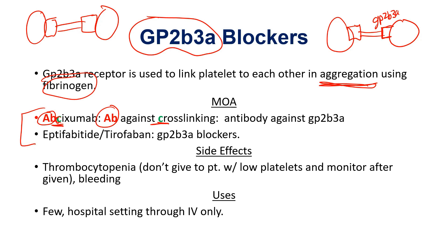The next two GP2B3A blockers are very difficult to remember — I couldn't think of a strategy. If you have a mnemonic, please put it in the comment section. These are flat GP2B3A blockers — not antibodies against cross-linking like abciximab. The drugs are eptifibatide and tirofiban. Just practice reading them over and over and try to get used to seeing them in this category.